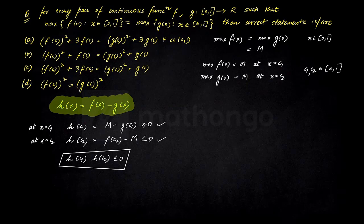Ab agar main dekhte hain, since f(x) and g(x) were continuous, humay yeh yahan par continuous functions diye gahe the question ke andar. So then I can say h(x) will also be continuous without any doubt. Ab agar h(x) bachcho continuous function hai such that at one value you are getting less than 0 and at one value you are getting greater than 0.